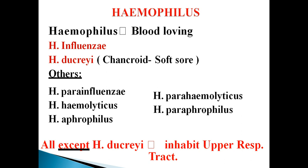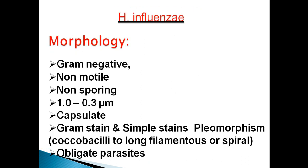The two pathogenic bacteria which are medically important are Haemophilus influenzae and Haemophilus ducreyi. Haemophilus influenzae inhabits our upper respiratory tract and Haemophilus ducreyi inhabits the genital tract.